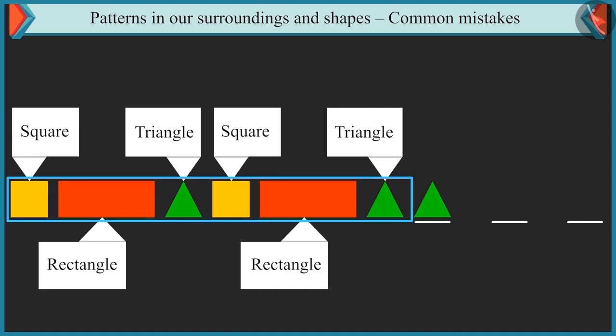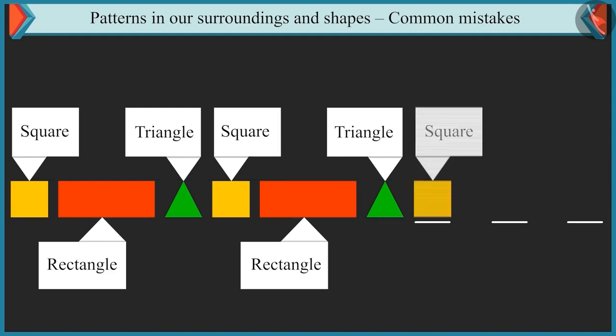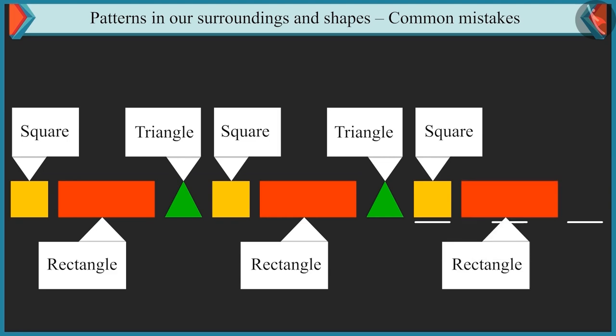If we repeat these shapes in this order, then after triangle, square, after square, rectangle and after rectangle, it is triangle. See, this pattern is complete.